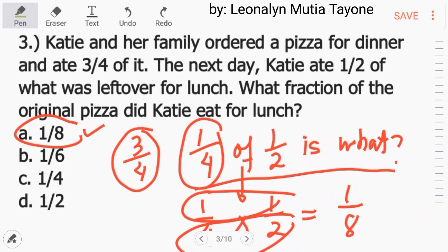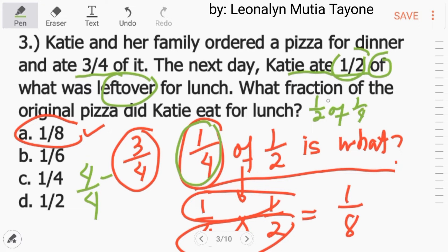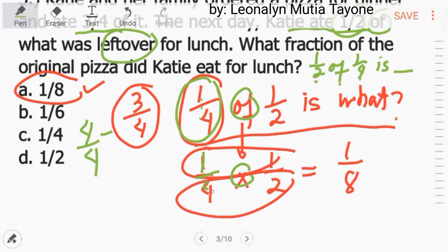Ulitin ko para mas lalong maintindihan. Bali, parang reading comprehension lang yan. Katie and her family ordered a pizza for dinner and ate 3 fourth of it. Bali, 4 over 4, yan yung 1 whole ng pizza, minus 3 fourth, mayroon ka ng 1 fourth na natira. Yung natira ng 1 fourth, the next day, Katie ate 1 half of what was left over. Kung i-rewrite natin yan, 1 half of 1 fourth na left over is what? So, pariyo lang yan. Itong of, multiplication yan. Tapos, i-multiply mo lang si 1 fourth at saka si 1 half. So, mag-multiply tayo ng numerator to numerator and that is 1. 4 times 2 equals 8. So, 1 eighth ang answer.